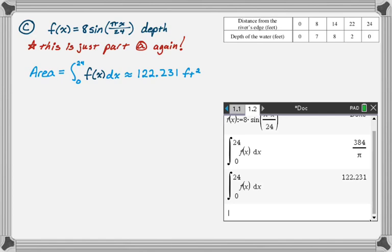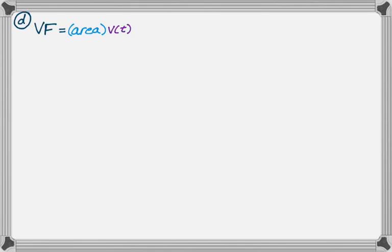The next part is almost part B again. Recall that volumetric flow is a product of cross sectional area and velocity. So I've now had to rename my function VF because they named a function f in the previous part. And that's kind of weird. So VF is area times velocity.